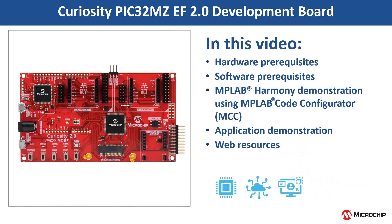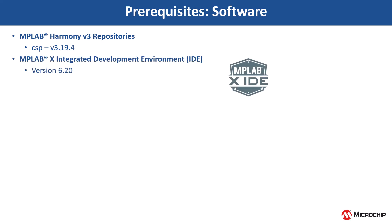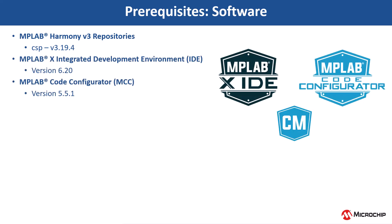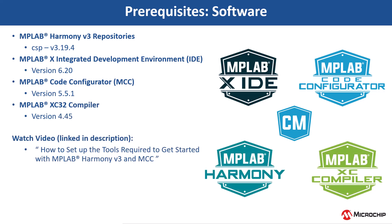In this video, we will show you how to get started with the Curiosity PIC32 MZEF 2.0 Development Board using MPLAB Code Configurator, also known as MCC. Clone the MPLAB Harmony V3 repositories and install the software shown here. You can use MCC Content Manager to clone these Harmony packages. If you are new to MCC, be sure to watch these videos. You can find the links in the video's description.